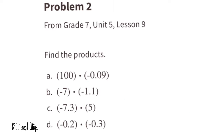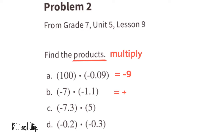Problem number 2 from 7th grade Unit 5 Lesson 9: find the products — products mean multiply. Part a: this is a positive times a negative, so I know my answer is going to be negative. I'm multiplying negative 0.09 by 100 — that means I need to move the decimal two places to the right. So 100 times negative nine-hundredths equals negative nine.